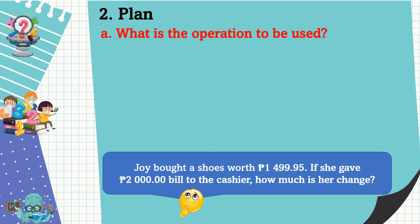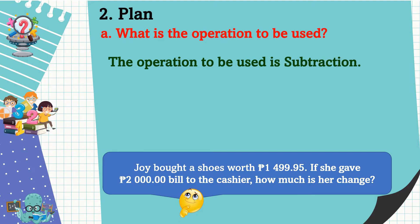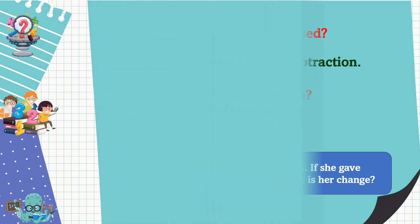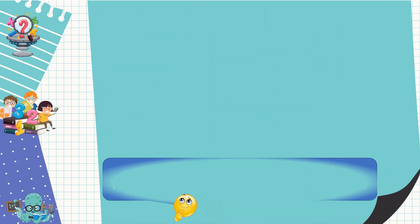The next step is to make a plan. The operation to be used is subtraction. The number sentence is: 2,000 pesos minus 1,499 pesos and 95 centavos equals n.